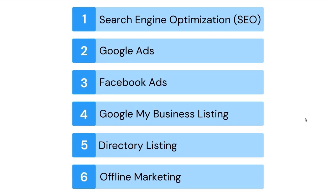The six strategies we're going to be looking at in this video are: SEO (search engine optimization), Google Ads, Facebook Ads, Google My Business listing, directory listing, and offline marketing. The first four are going to be very important. For some people, even the fifth and sixth can be important.